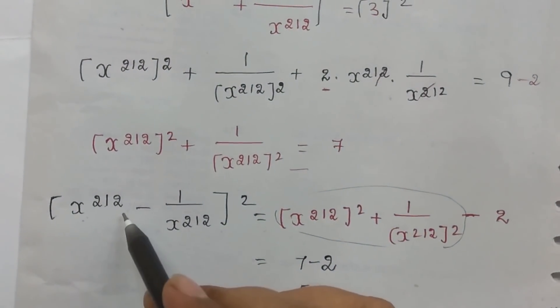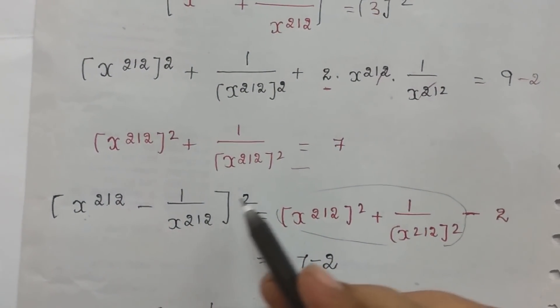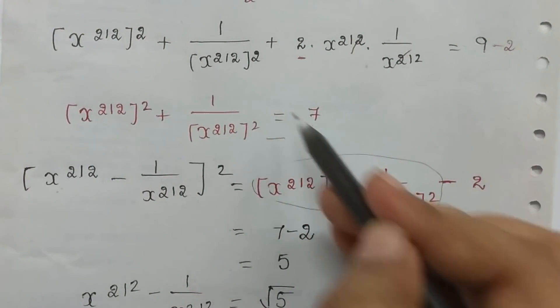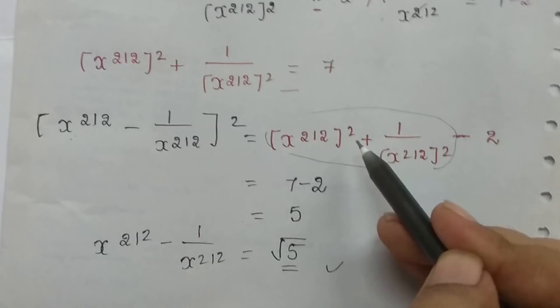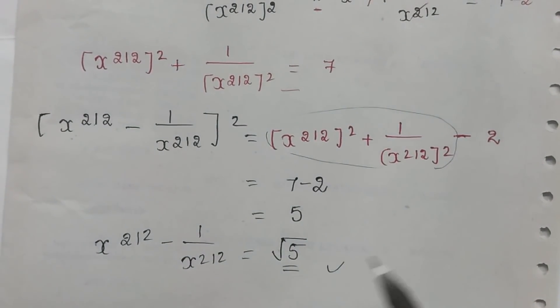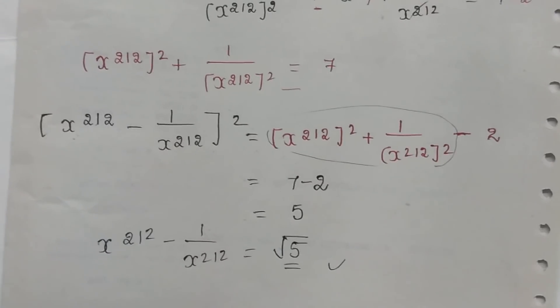If we have a minus value, the a minus b whole square formula is used. This value substitutes into the concept of root 5. That is the concept of the shortcut.